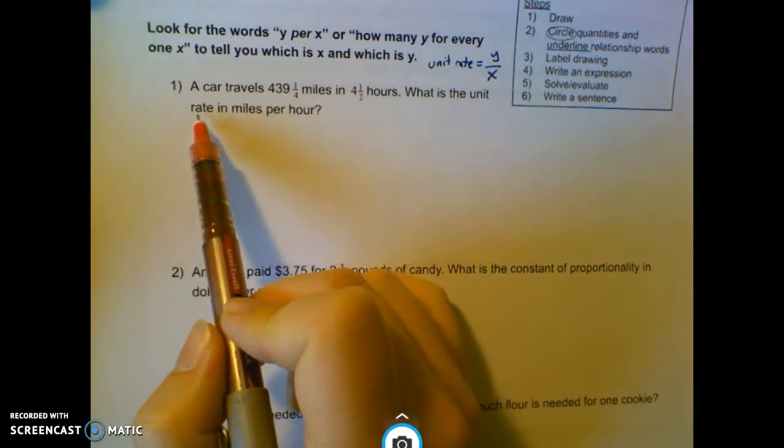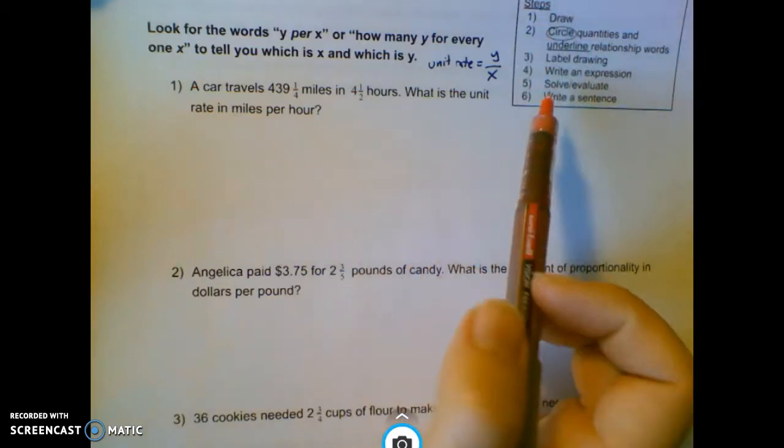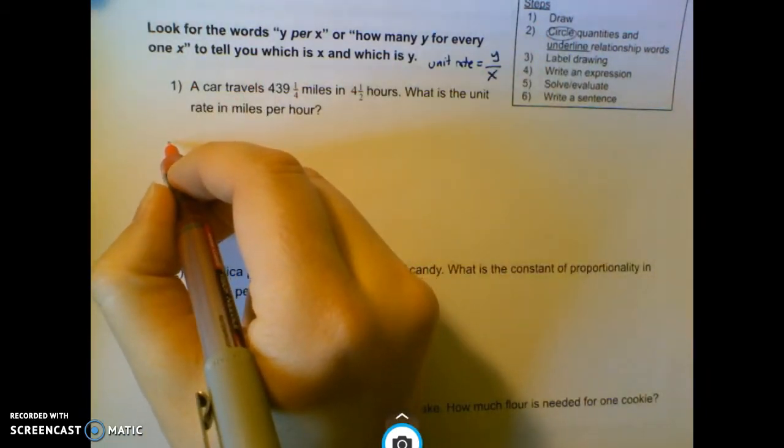Unit rate should look familiar. That and constant proportionality is what we worked at at the beginning of the year. But even if you don't remember that, we can still go through our steps. So the first thing, I've got my little car and it's driving along.